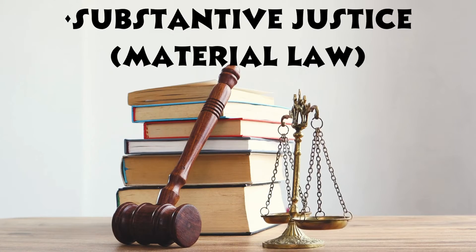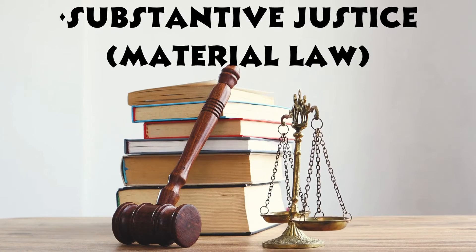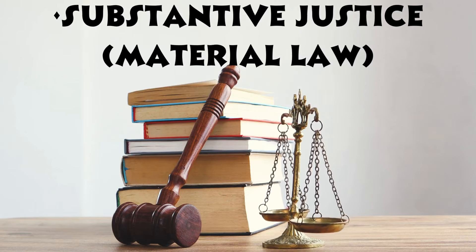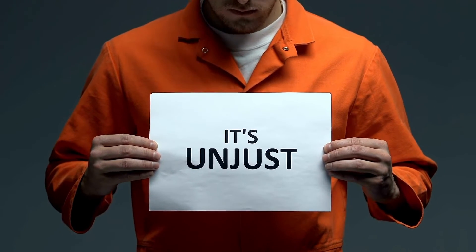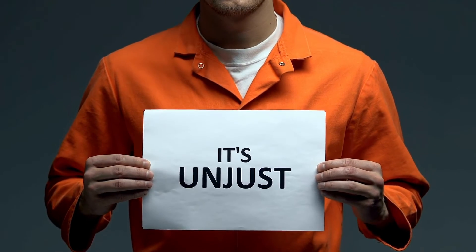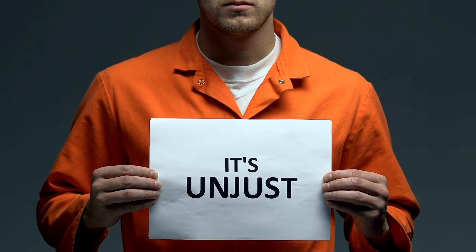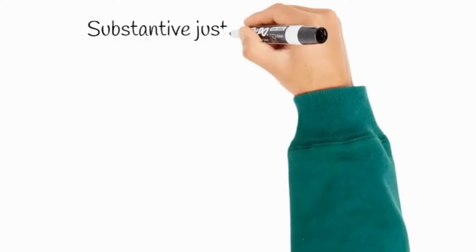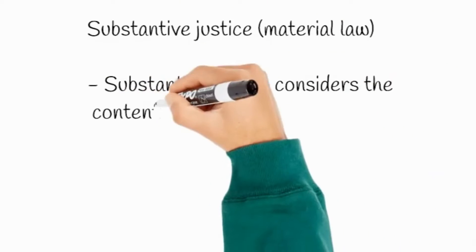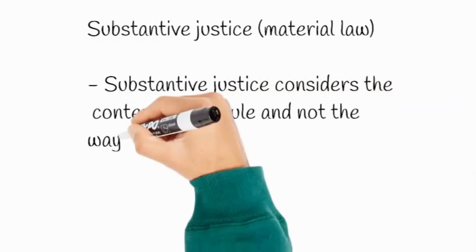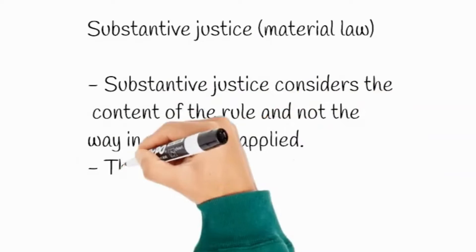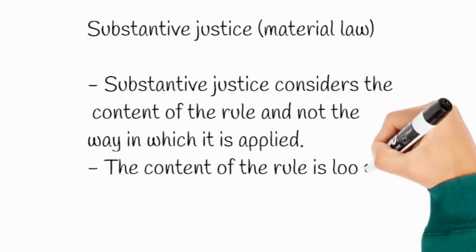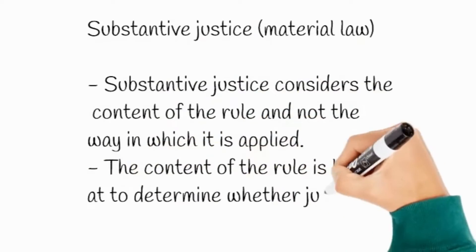Another part of justice is substantive justice, which also refers to material law. Formal justice may appear unjust at times. Substantive justice considers the rule's content rather than how it is applied. The rule's content is examined to determine whether justice is fair and just.